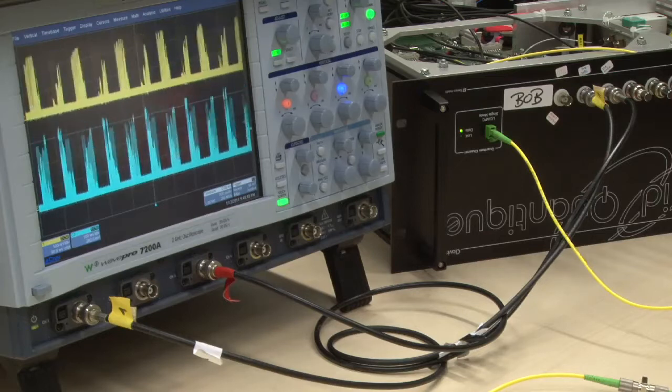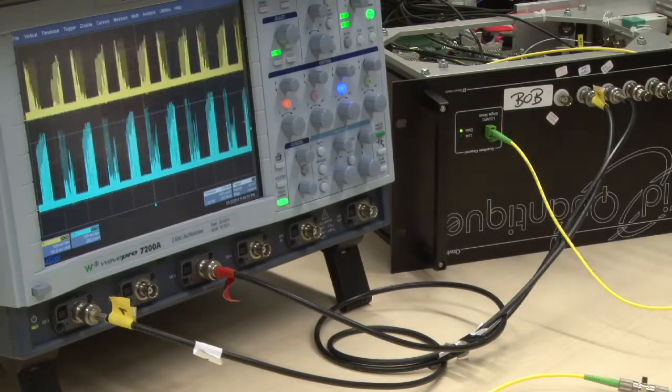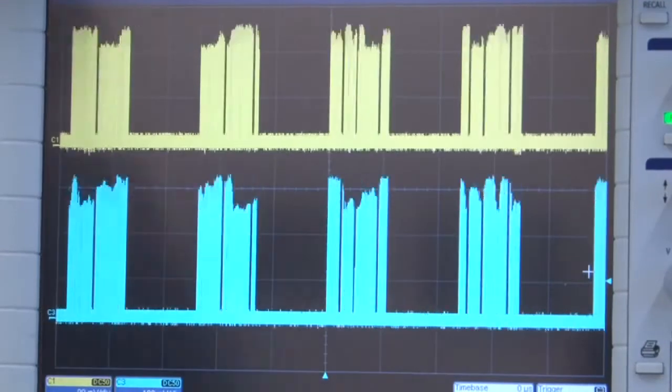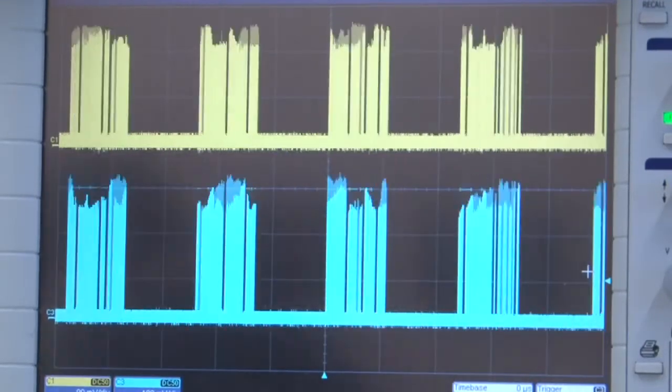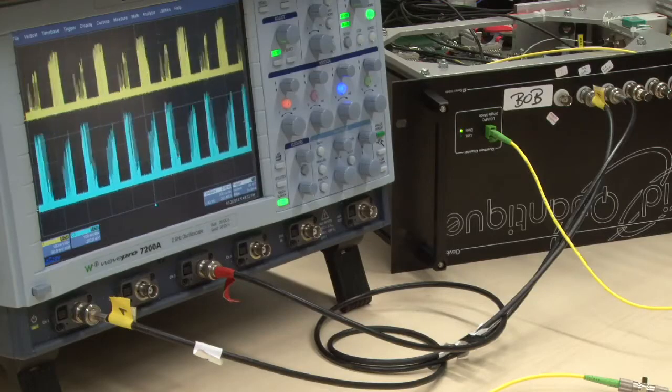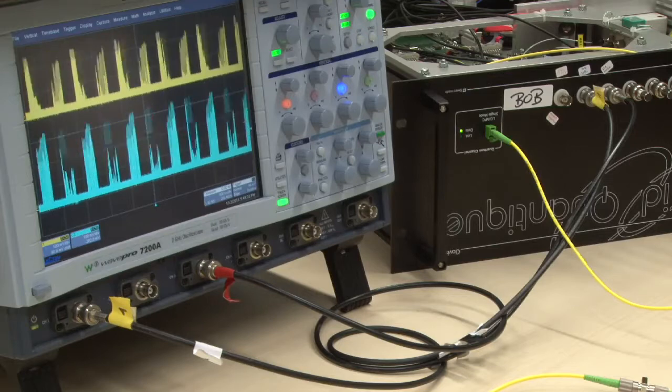The outputs from these electronic tabs are now observed on the oscilloscope. What you see are the gate pulses applied to the two detectors. This tells us when the detectors in Bob are active. What we also see is that Alice and Bob communicate in frames of about 1000 pulses.